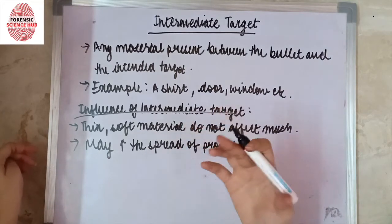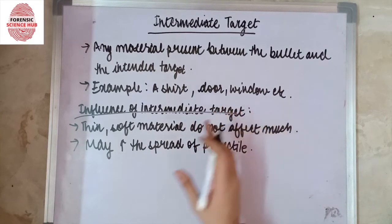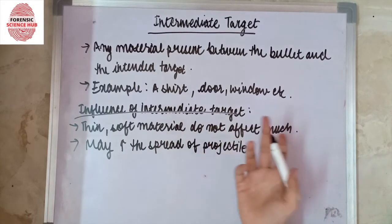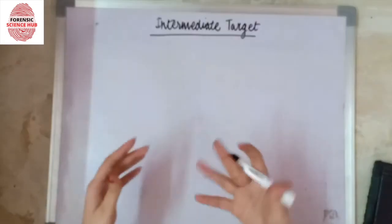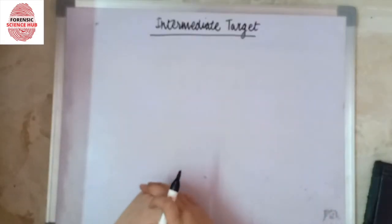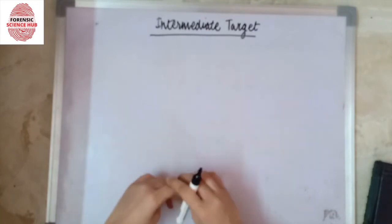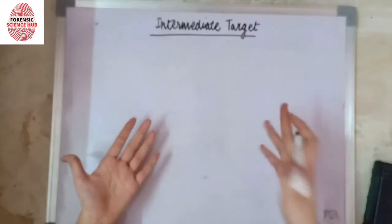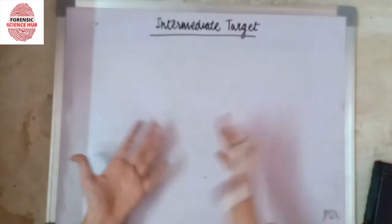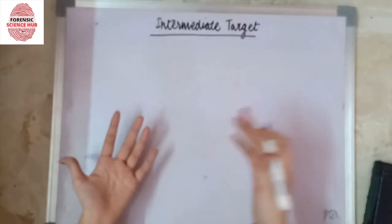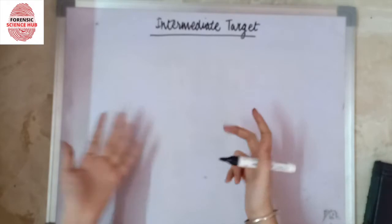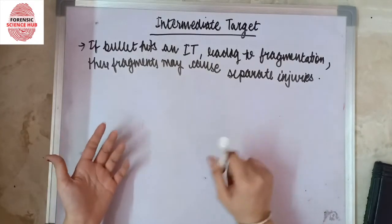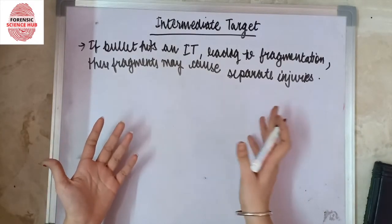The range and direction of the firearm may also change. Additionally, if a bullet hits an intermediate target and causes its fragmentation, these fragments may cause separate injuries on the intended target, acting as secondary missiles.